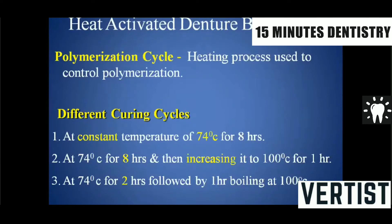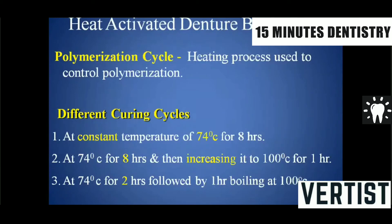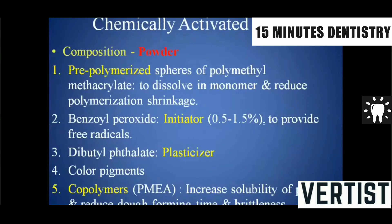The polymerization cycle is the heating process used to control polymerization. Different curing cycles are recommended: first, a constant temperature of 74°C for 8 hours; second, 74°C for 8 hours followed by increasing to 100°C for 1 hour; third, 74°C for 2 hours followed by 1 hour boiling at 100°C — this third option is the rapid curing cycle, a commonly asked distinction between slow and rapid curing cycles.